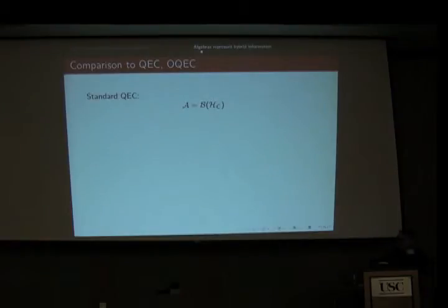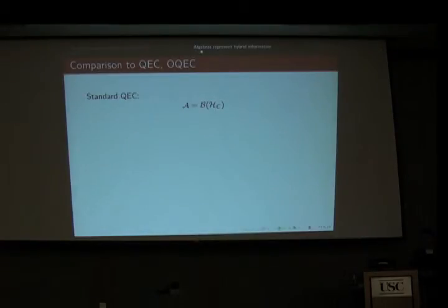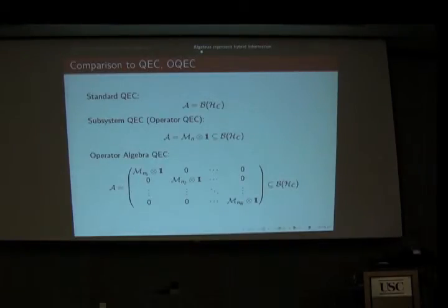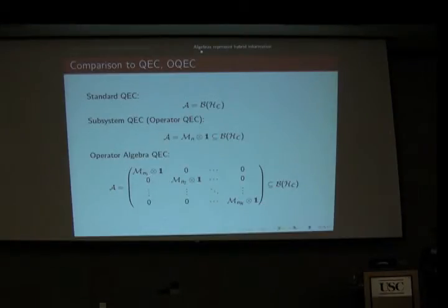We recover standard quantum error correction by forcing the algebra to be a full matrix algebra acting on a code subspace H_C. If we allow the algebra to have a trivial part, we recover subsystem quantum error correction, or operator quantum error correction. With no restriction, we allow any possible structure. Each subalgebra defines a subsystem code, and the theorem tells us when we can correct them all together at once with the same correction channel.